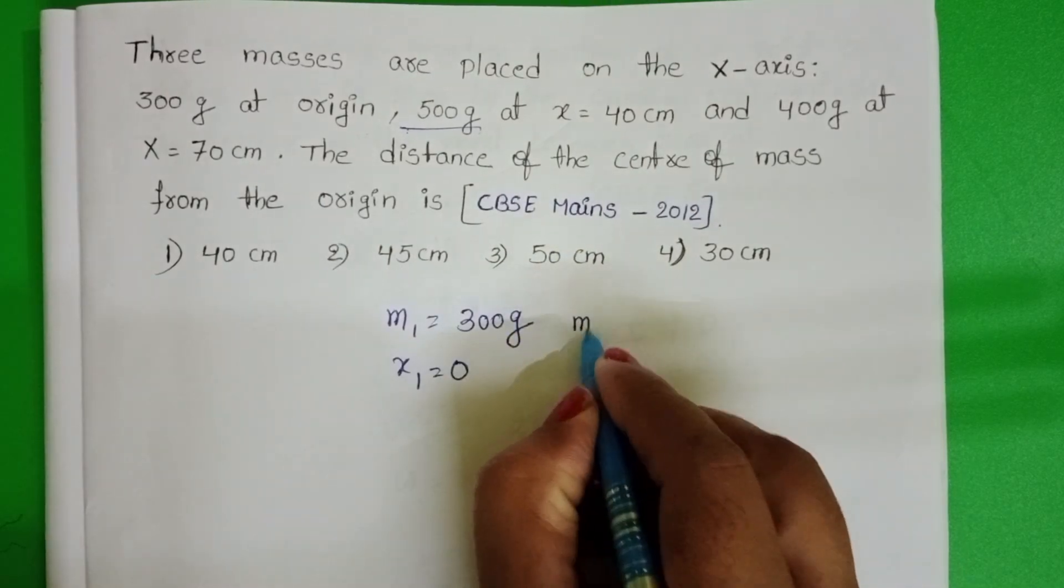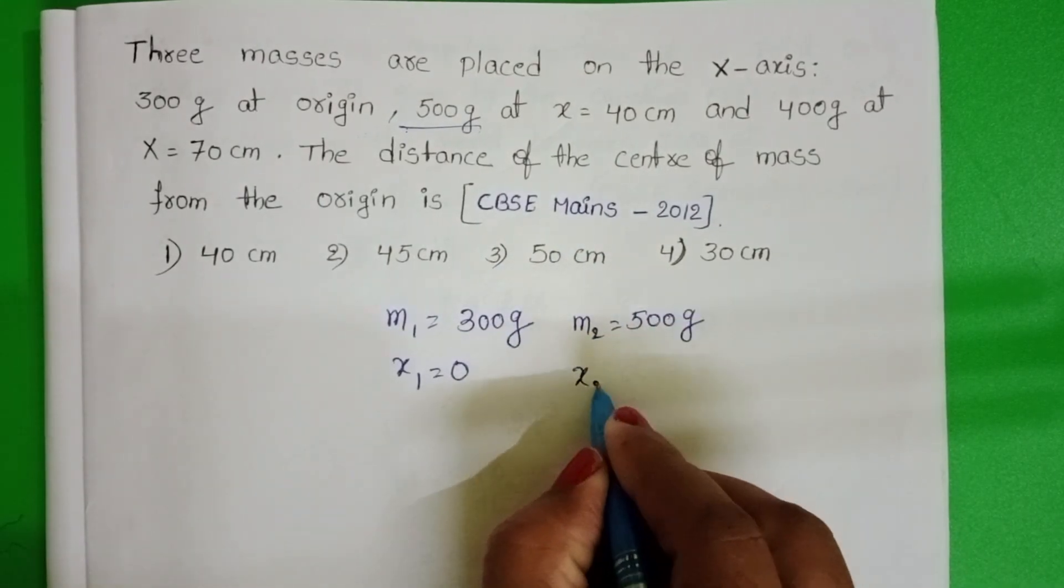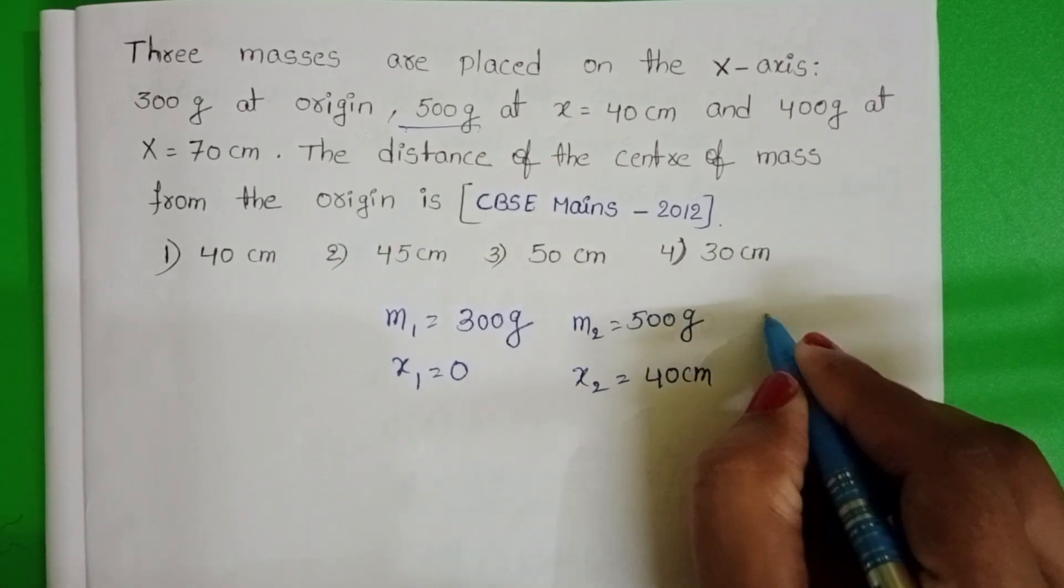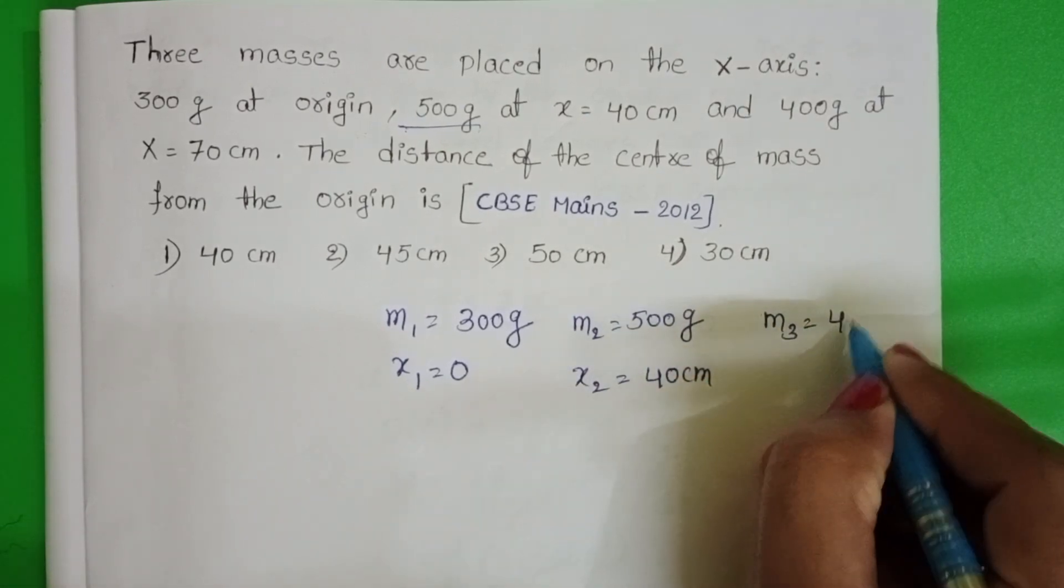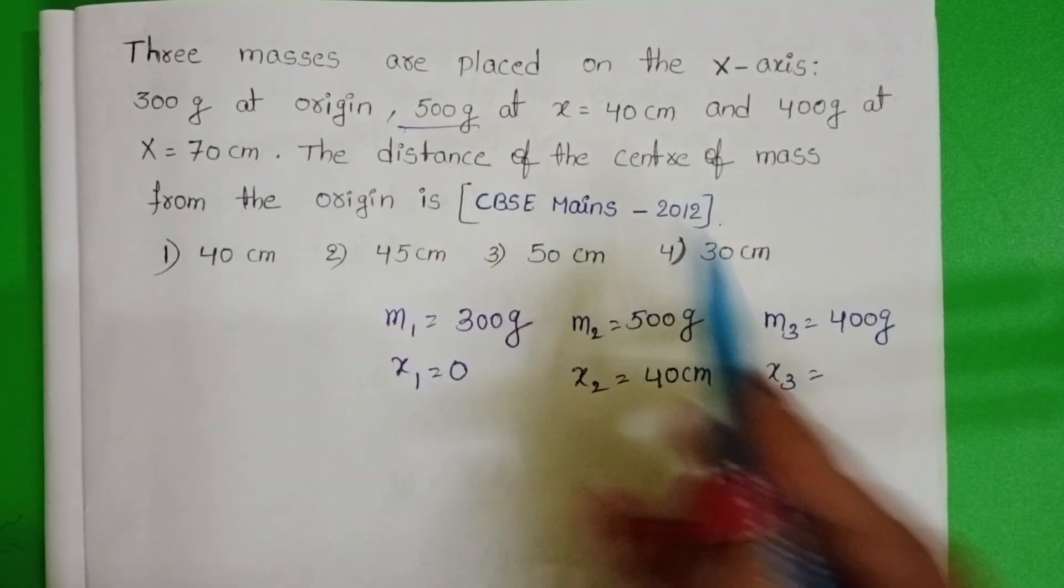The second mass M2 equals 500 grams, and it is placed at 40 centimeters. The third mass is 400 grams, placed at 70 centimeters.